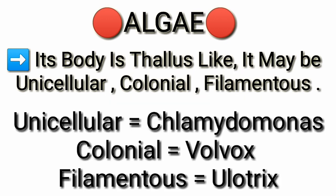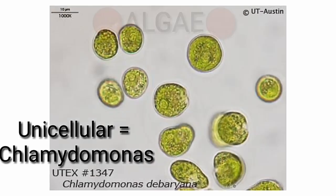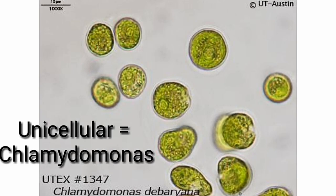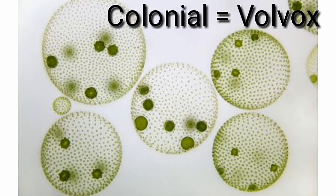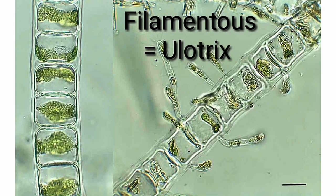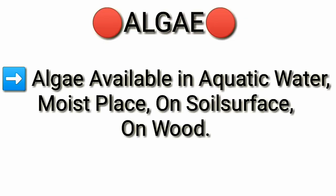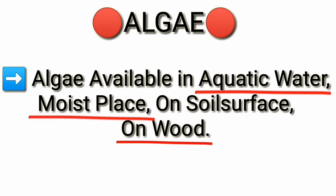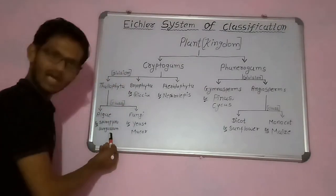Here are some examples: Chlamydomonas is a unicellular algae, Volvox is a colonial algae, and Ulothrix is a filamentous algae. Algae are mostly available in aquatic water, moist places, on wood, and on soil surfaces.